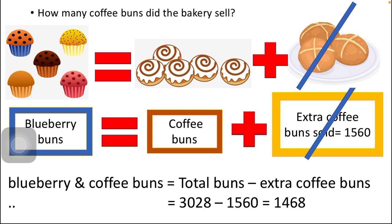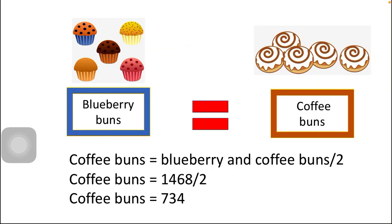Now blueberry and coffee buns together are 1468, and at this point blueberry buns are equal to coffee buns. So to find only the coffee buns, we use the formula: coffee buns equals blueberry and coffee buns divided by 2, which is 1468 divided by 2.